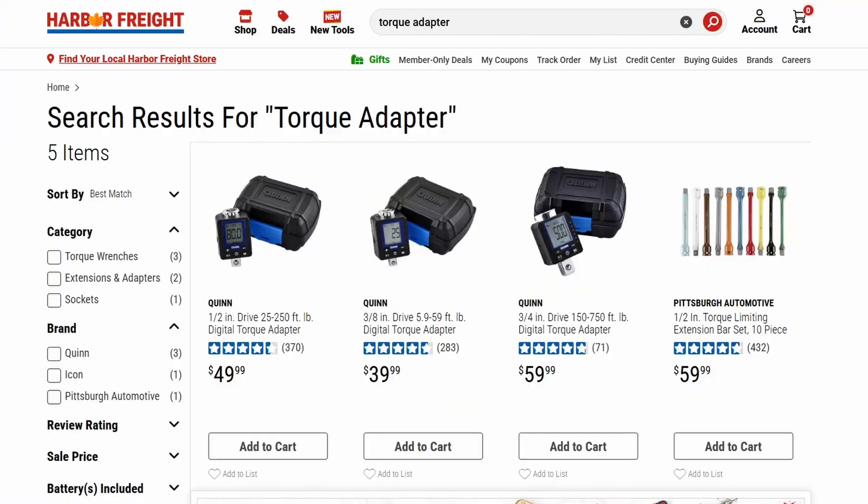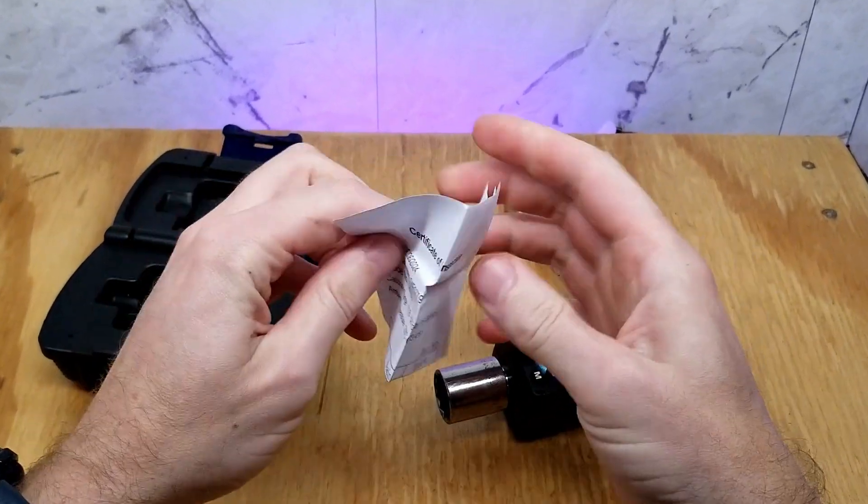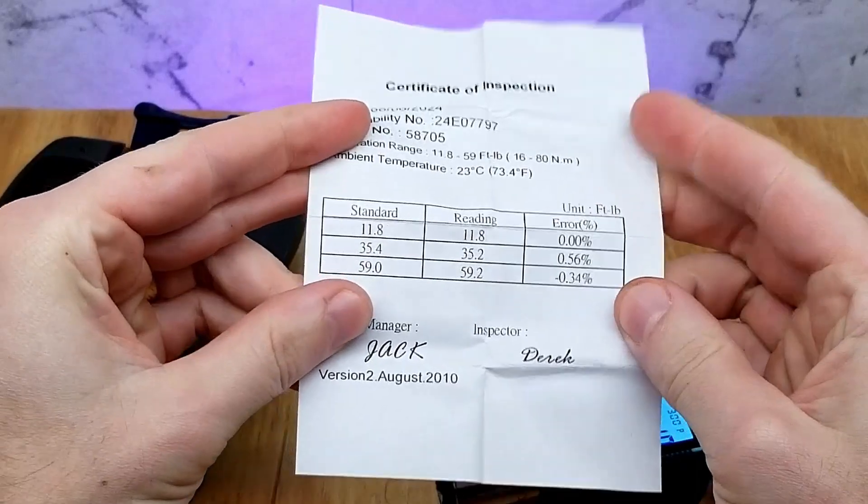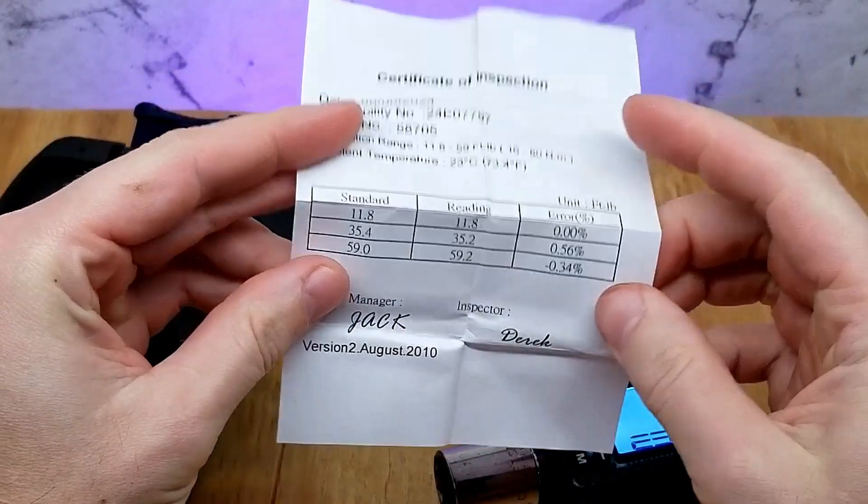Me being a cheapo, I bought the cheapest version of this from the local Harbor Freight. Honestly though this thing is pretty inexpensive for the accuracy they claim on their website of plus or minus 2%. The cheapest one had the lowest rated torque range of 5.9 to 59 foot pounds. They even threw this piece of paper in the case, where it looks like I got more accuracy than what I originally anticipated. I must have got the pick of the litter because this one tested within a half percent throughout the whole range. Thanks Derek.